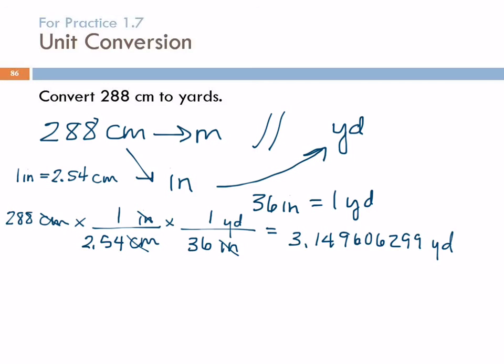Conversion factors are where we often run into exact numbers. So we need to look at these and decide, are these exact or not? 1 inch to 2.54 centimeters, is this exact? Yes, it is. How about 1 yard and 36 inches? That's also exact. So then we don't need to worry about them. They're not going to change anything. We look at our starting number, 3 sig figs. That means our answer will have 3 sig figs. The 3, the 1, and the 4. So that's going to be 3.15 yards.